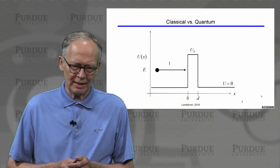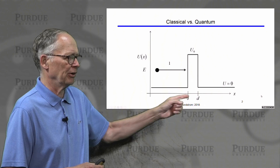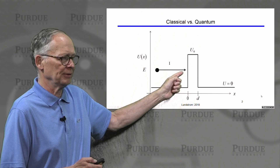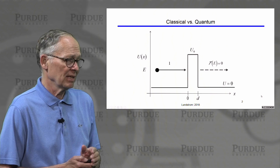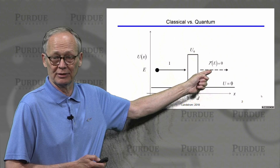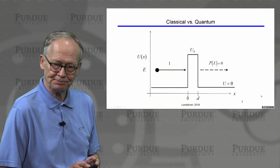Consider an electron that encounters an energy barrier. This is an electron with energy E that encounters a barrier with a higher energy. What happens classically? Well, classically there's no chance that this electron can get on the other side of the barrier because it doesn't have enough energy — it can't hop over. So the probability that it will transmit across is zero.